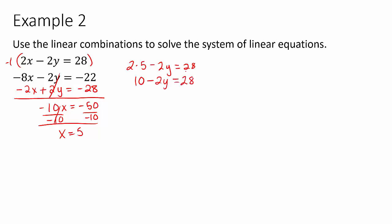So I'm going to subtract this 10 and get negative 2y equals 18. I'm going to divide by negative 2, so y equals negative 9. So x is 5, y is negative 9, so (5, -9) is our answer.